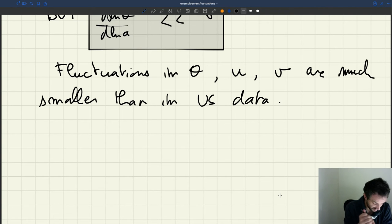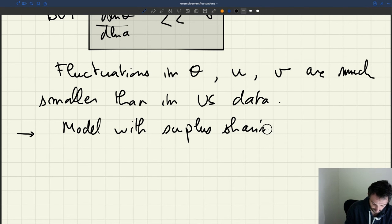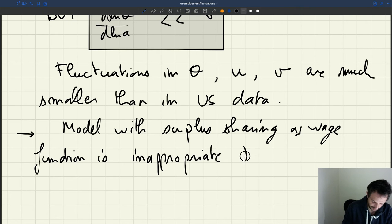You really cannot explain that here. You would have fluctuations in tightness that are about 10 times too small. So your fluctuations in unemployment are going to be 10 times too small, an order of magnitude too small. So this tells you that the model with surplus sharing as a wage function is inappropriate to describe business cycles on the labor market.